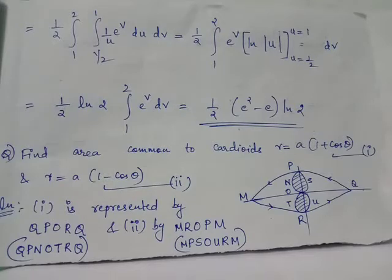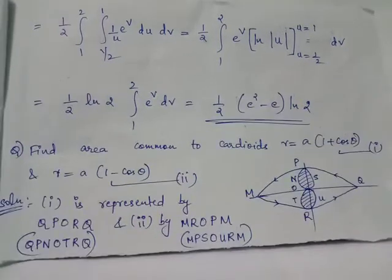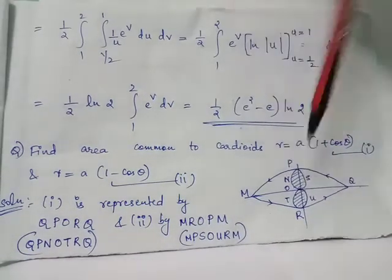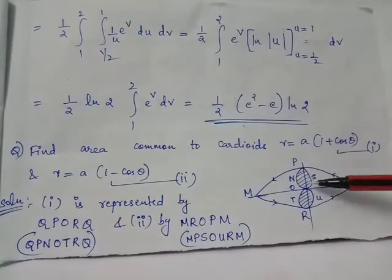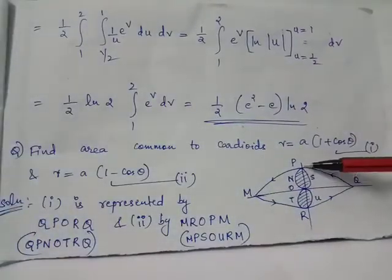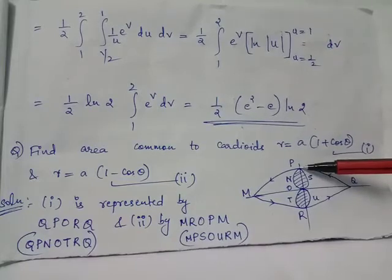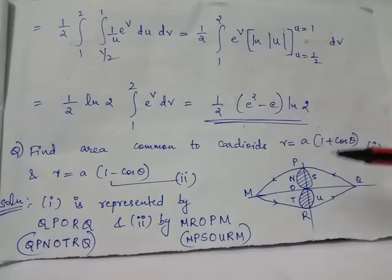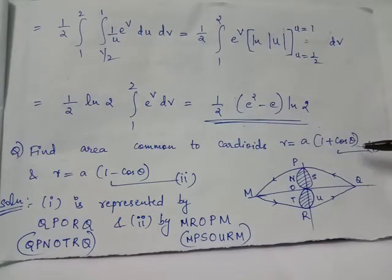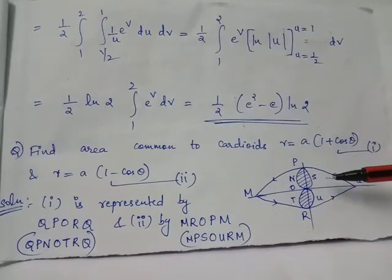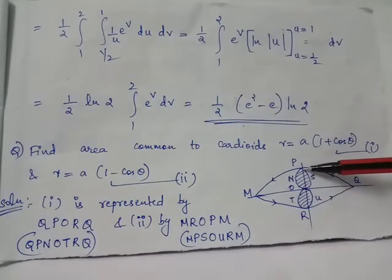Drawing a ray from the origin, the ray moves from theta equals 0 to theta equals pi by 2 to trace the region OSP, and the ray moves from theta equals pi by 2 to theta equals pi to trace the region PNO. So theta varies from 0 to pi by 2 for the region OSP, and theta varies from pi by 2 to pi for the region PNO.